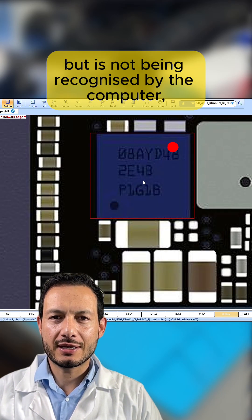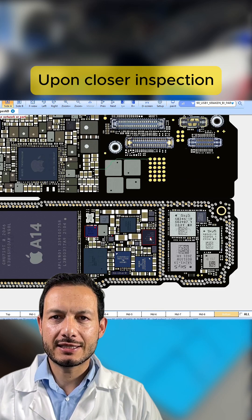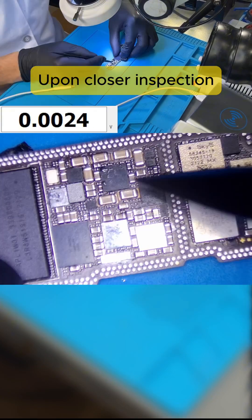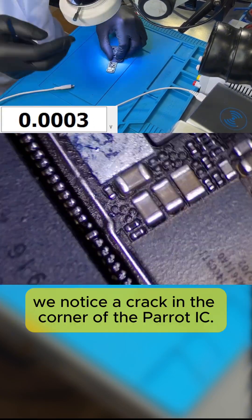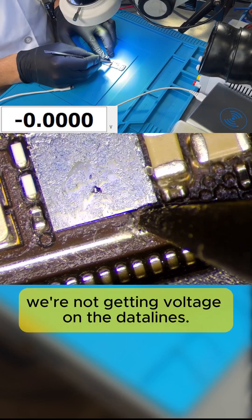Since the phone charges but is not being recognized by the computer, we decide to check the Parrot IC. Upon closer inspection, we notice a crack in the corner of the Parrot IC. This must be the issue, which is why we're not getting voltage on the data lines.